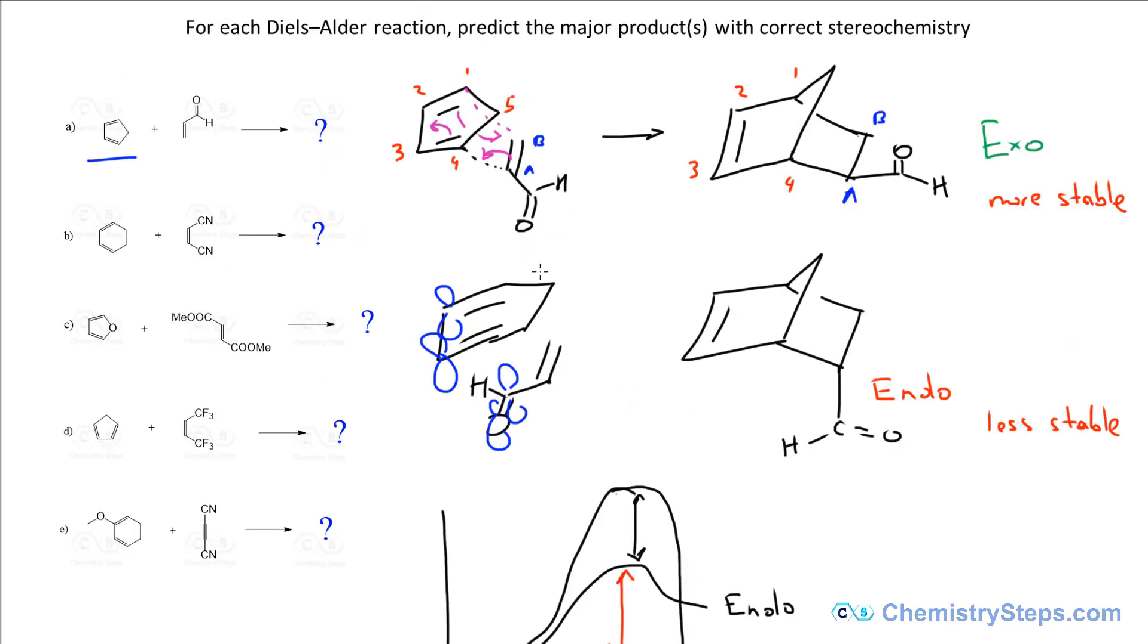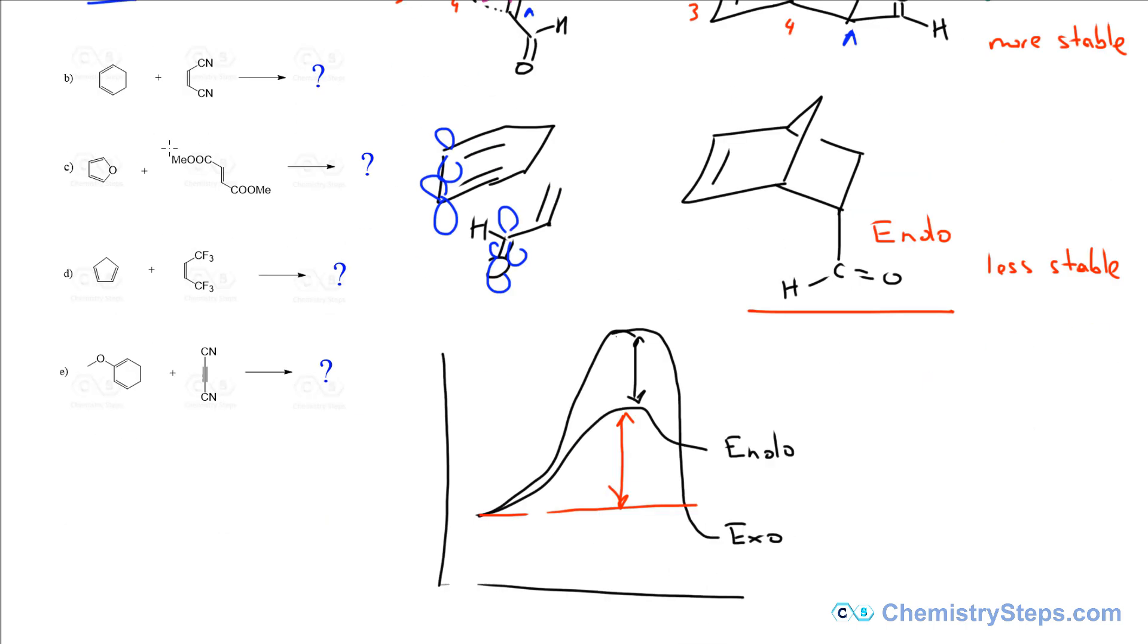To keep this short, most of the time in the test, when you are asked to predict the product of the Diels-Alder reaction when you have a cyclic diene, the endo is going to be the preferred major product. Now let's erase all of these and we can discuss a little more about the stereochemistry of this reaction.